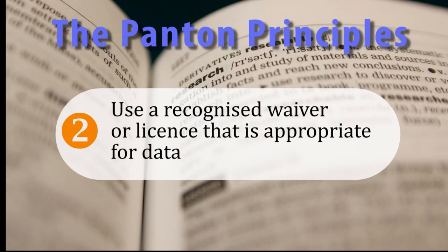Secondly, use a recognised waiver or licence that is appropriate for data. Appropriate data licensing reduces ambiguity still further. When licensing your data, you'll see that there are many different types of licence available. Some of these are intended for data, whilst others are only suitable for content and should never be used to licence data. Typically, you'll need to state your chosen licence alongside your data as part of the associated metadata and, if possible, provide a link to the licence's online listing.